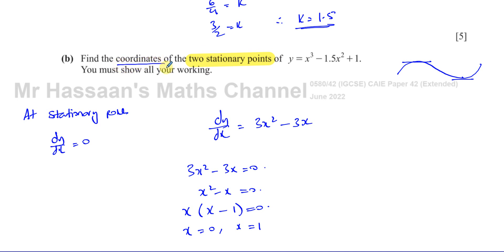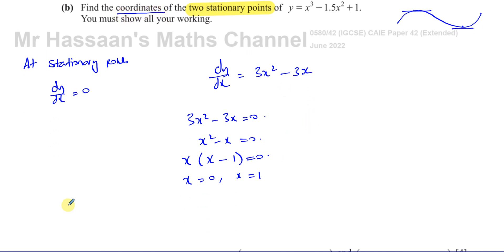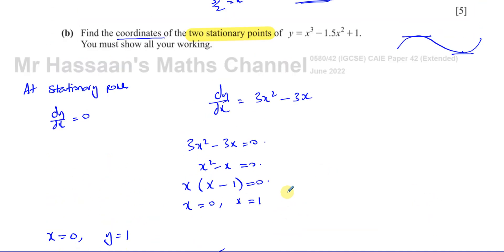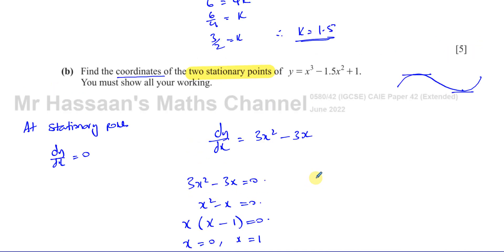So we want to find the coordinates. We've got to find the y coordinates as well. So we know that when x equals 0, y is going to be 1. And when x equals 1, y is going to be 1 cubed, which is 1 minus 1.5 times 1 squared, which is 1.5 plus 1. That's going to be 2 minus 1.5, which is 0.5. So we can see the coordinates are going to be 0, 1, and 1, 0.5. Those are the coordinates of the two stationary points of this curve.